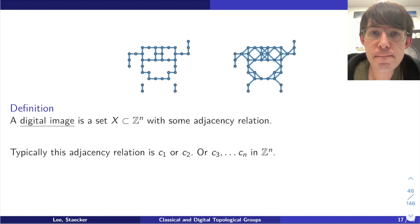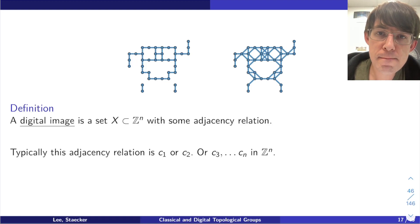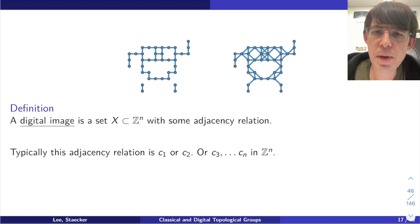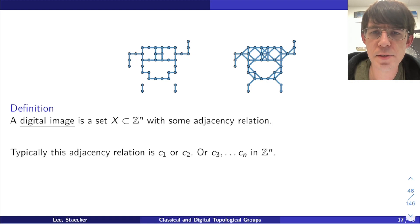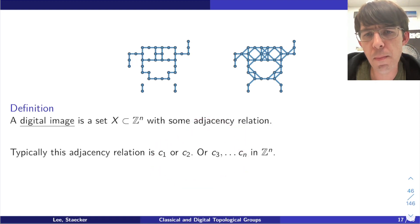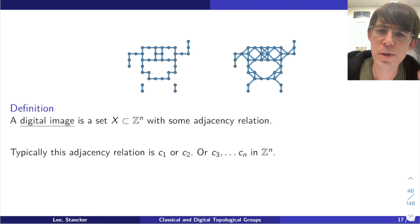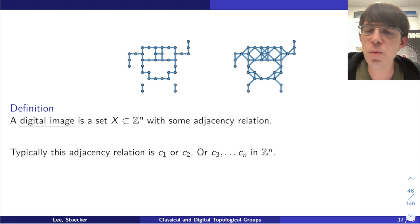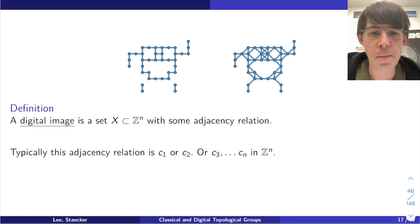Someone asks: do you ever use other lattices besides Z^N, like a triangular lattice? In the early days some papers addressed that, but people have more or less focused on the Z^N lattice. Almost everything I say is not specific to Z^N anyway — most work is done on the level of abstract graphs. If you want you can stick any graph into an integer lattice or some other lattice, although the analogy with digital images makes Z^N the most natural since that's what digital images look like in the real world.